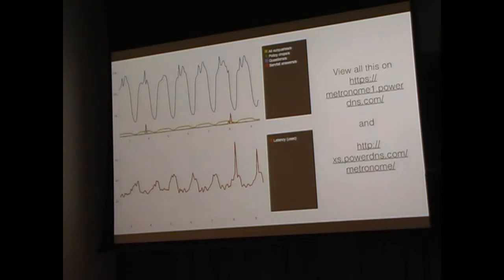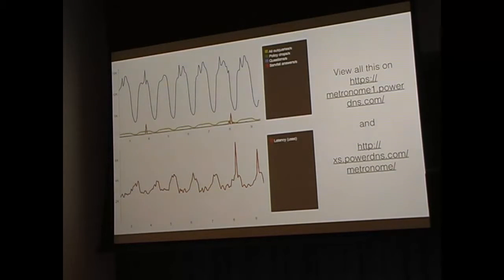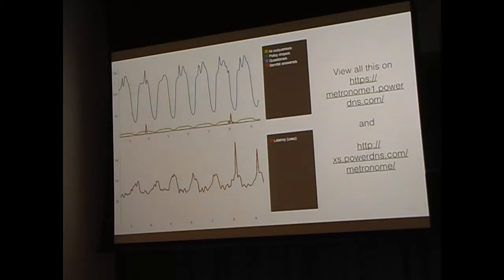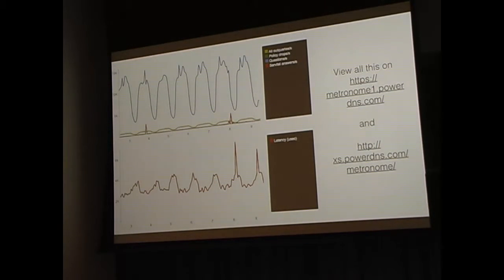The bottom graph shows average latency — which by the way is not the right way to look at latencies, because average latency only tells you about the average case, not the outliers. But here you can already see that as the query load goes down during the night, the latency goes up — the server becomes slower as it gets less traffic. The average user gets better service during peak times than during the night. You can view all these graphs live on the right. We use these graphs for debugging — if you run a PowerDNS piece of software you can send all your statistics to the PowerDNS Metronome server.